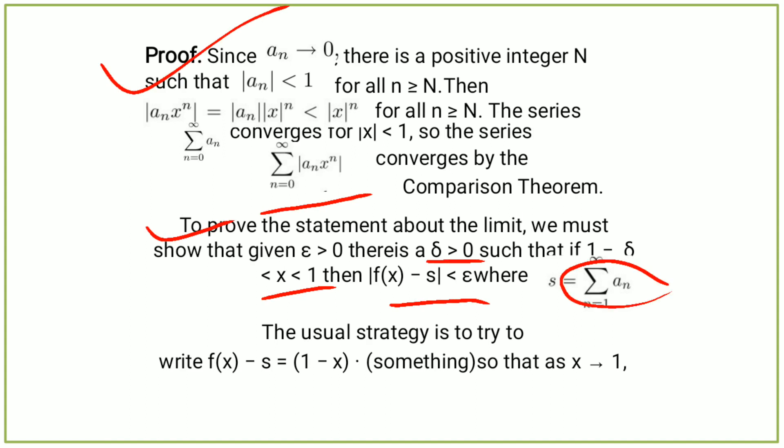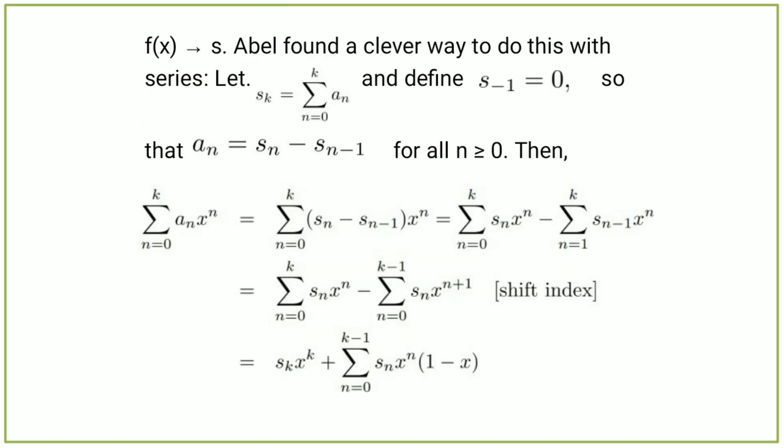The usual strategy is to try to write f(x) minus s equal to (1 minus x) times something, so that as x tends to 1, Abel found a clever way to do this with series. Let sₖ equal the summation from n equals k to infinity of aₙ, and define s₋₁ equals 0, so that aₙ equals sₙ minus sₙ₋₁ for all n greater than or equal to 0.